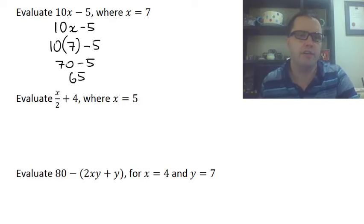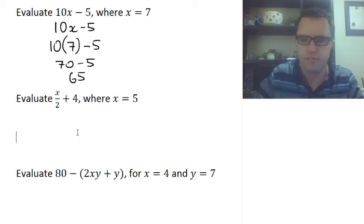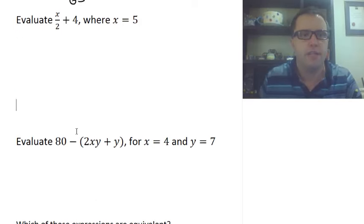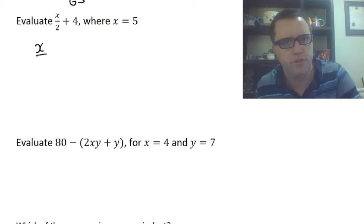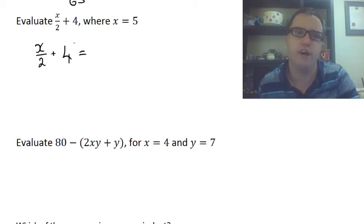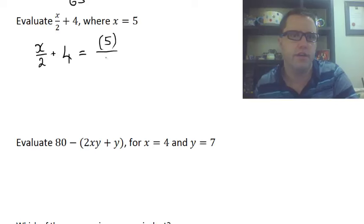So evaluate x over 2 plus 4 where x is equal to 5. I'm going to give myself a little bit more room here. A different way I'm going to let you do this. I'll show you a different way. So if I have x over 2 plus 4, but now x is going to equal 5. So I've put the equal sign here. I want you to watch where I go with this.